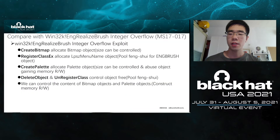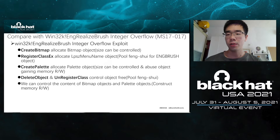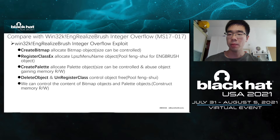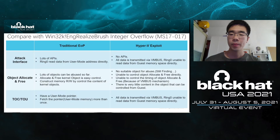I will take ENGRealizeBrush as an example explaining why Hyper-V is difficult. ENGRealizeBrush integer overflow uses this function to realize kernel heap feng shui. We can construct memory read and write by controlling the content of bitmap objects and palette objects. It is easy to control palette objects in the Windows kernel by using the CreatePalette API. This is the difference between traditional Windows EOP exploits and Hyper-V exploits.